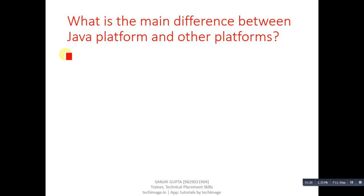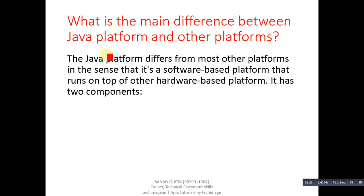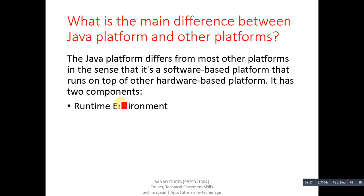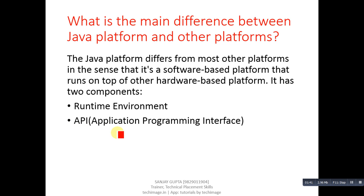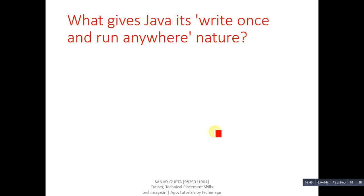Next question: what is the main difference between Java platform and other platforms? The Java platform differs from most other platforms in that it is a software-based platform that runs on top of other hardware-based platforms. It has two components: the runtime environment and the API (Application Programming Interface).